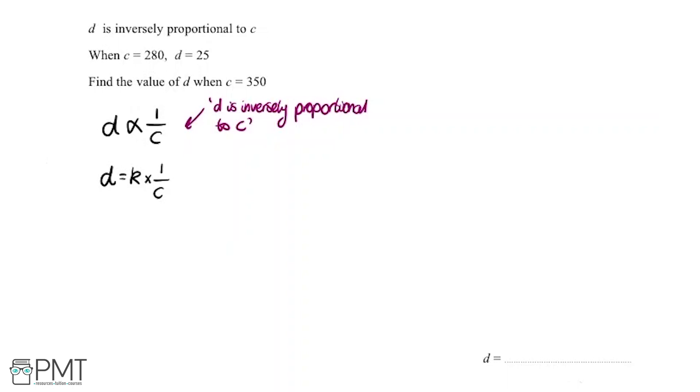Now we need to know what this constant is because this is a certain value but we don't know what it is at the minute, so we just said K. We're going to do that using the information up here. We know that D is inversely proportional to C when C is 280 and D is 25. So we're going to sub in the info from the question.